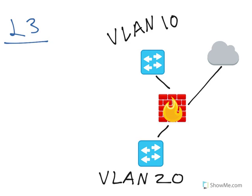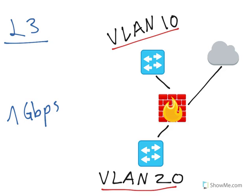One of the performance figures you're going to encounter when reading a firewall's data sheet is the layer 3 throughput. For example, for a particular firewall, the data sheet says we have a 1 gigabit per second layer 3 throughput. That strictly means packet forwarding performance. Assuming that we have two VLANs — VLAN 10 and VLAN 20 — and we're doing inter-VLAN routing through the firewall, then we should expect a throughput of 1 gigabit per second.